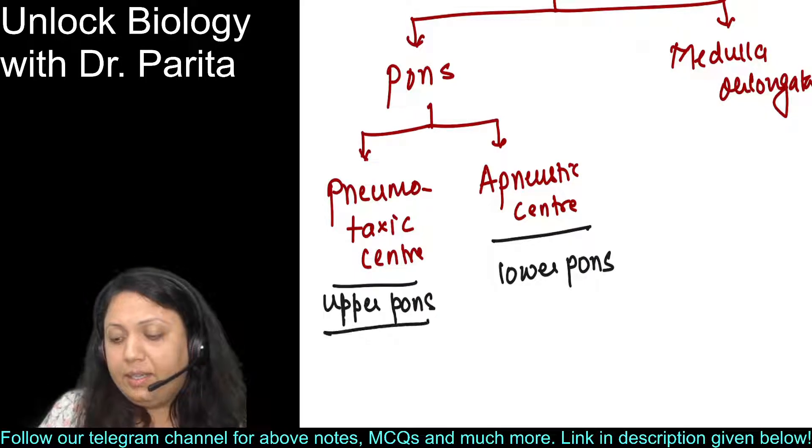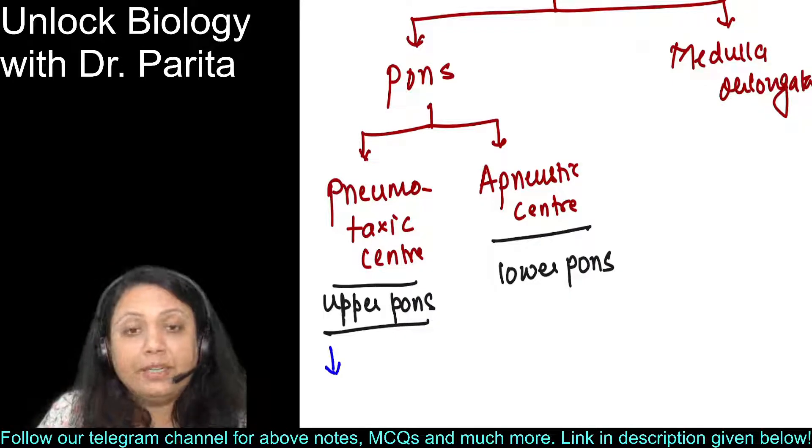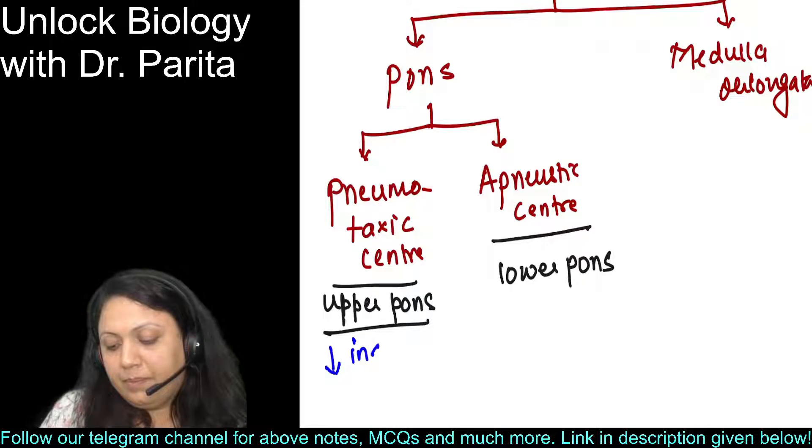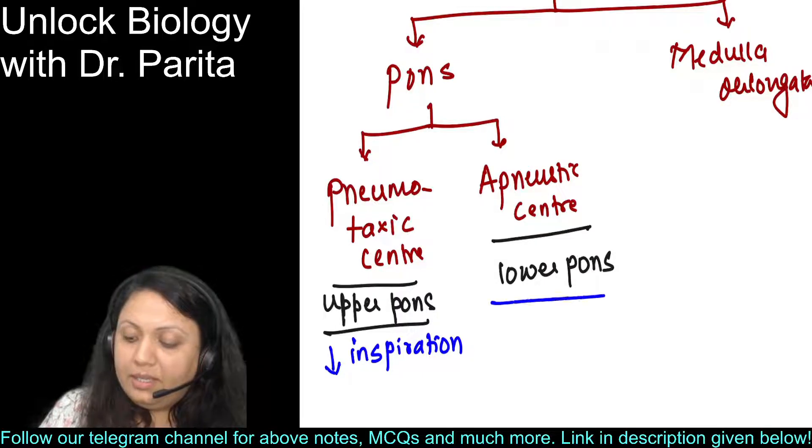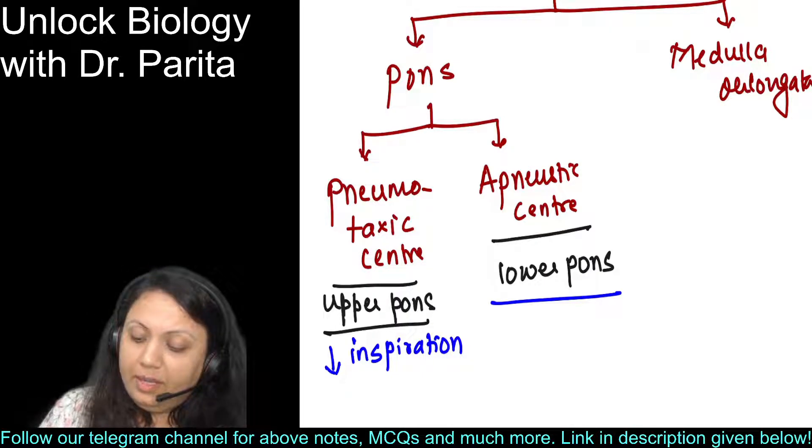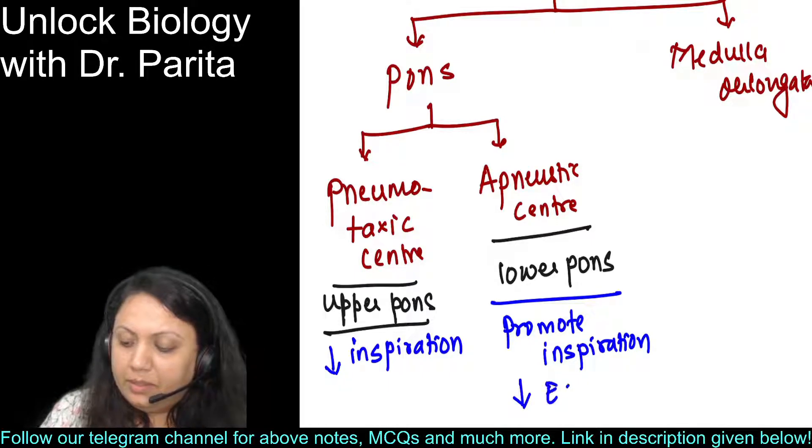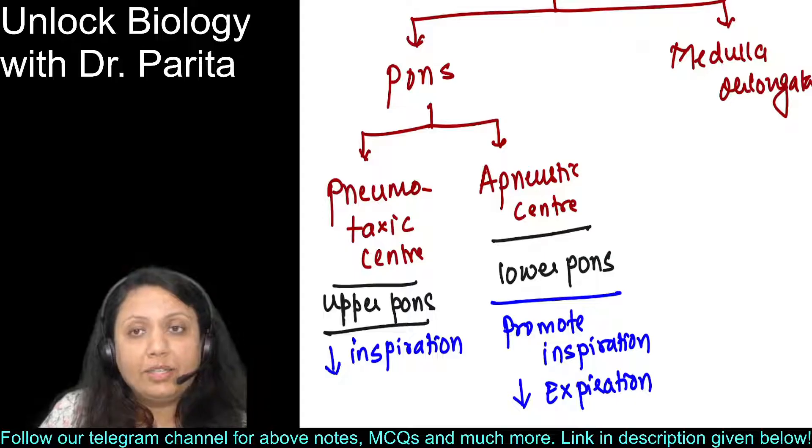The pneumotaxic center is going to inhibit - that is, decrease - inspiration. The apneustic center is going to promote inspiration but inhibit expiration or exhalation.